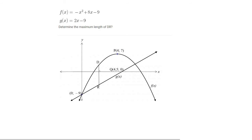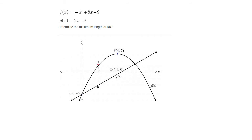Alright guys, these types of maximum length questions are actually quite easy — easy marks. Let me show you what I mean. So let's say for example we knew the coordinates of D were 2 and 8, and then the coordinates of R had the same x value, so it would be 2 and minus 6.